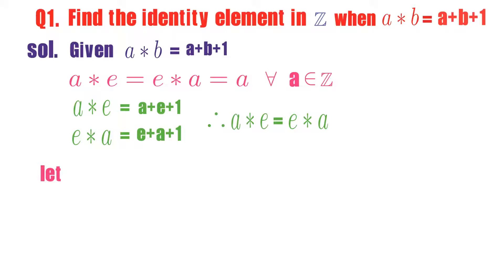Now I will take a star e equal to a. You can take e star a equals to a also, anyone you take. What is a star e? a plus e plus 1 equals a. Observe here, a will get cancelled. You will get e plus 1 equals 0.